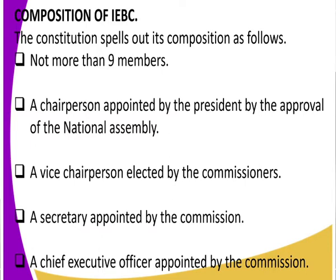The chairperson is appointed by the president with the approval of the National Assembly. The vice chairperson is elected by the commission — the nine commissioners get to agree on who is going to be their vice chairperson. A secretary is appointed by the commission, and finally a chief executive officer, the CEO, is also appointed by the commission.